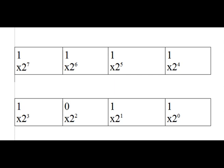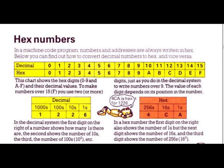How does hexadecimal work and why is it useful? There are 256 possible combinations of bits. We don't want 256 symbols, so let's split the number into two halves of four bits each — these four-bit numbers are called nibbles. With four bits, the total possible combinations are 2×2×2×2, which is 2 to the power of 4 = 16. So we use 16 symbols. For numbers 0–9 we use the decimal digits; for the other six we use the first six letters: A for 10, B for 11, all the way up to F for 15.